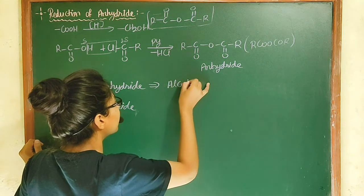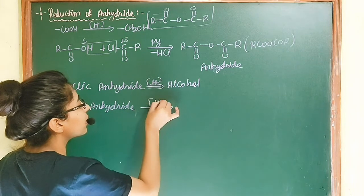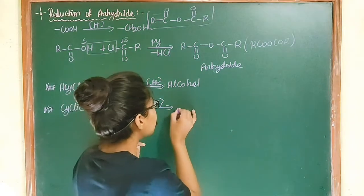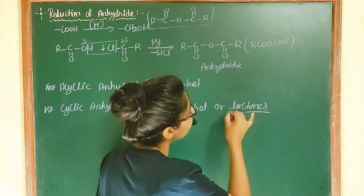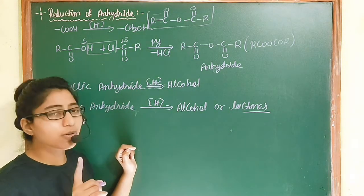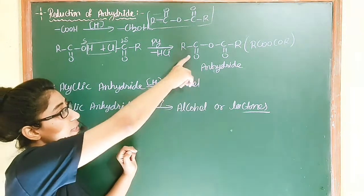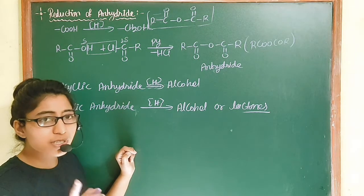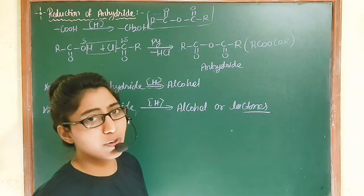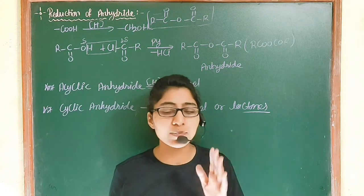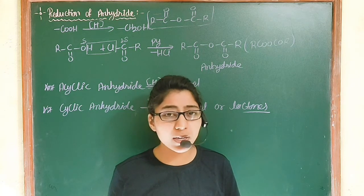The reduction product of anhydride can be alcohol or lactone. It depends on which reagent you use — it depends on the nature of the reducing agent. If you have a cyclic anhydride or open-chain anhydride with a strong reducing agent, there is always formation of alcohol. If you have a cyclic anhydride with a mild reducing agent, there can also be formation of lactone.